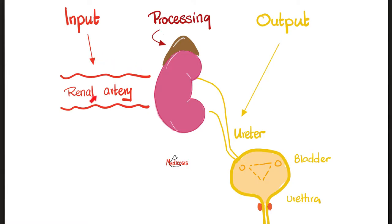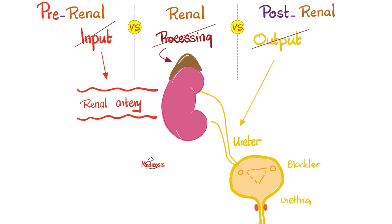What's the input to the kidney? The renal artery. What's the processing unit? The kidney itself. And what's the output? Ureter, bladder, urethra. Which means if the problem is in the input — less blood is reaching the kidney — it's called pre-renal renal failure, or pre-renal kidney injury, or pre-renal azotemia.